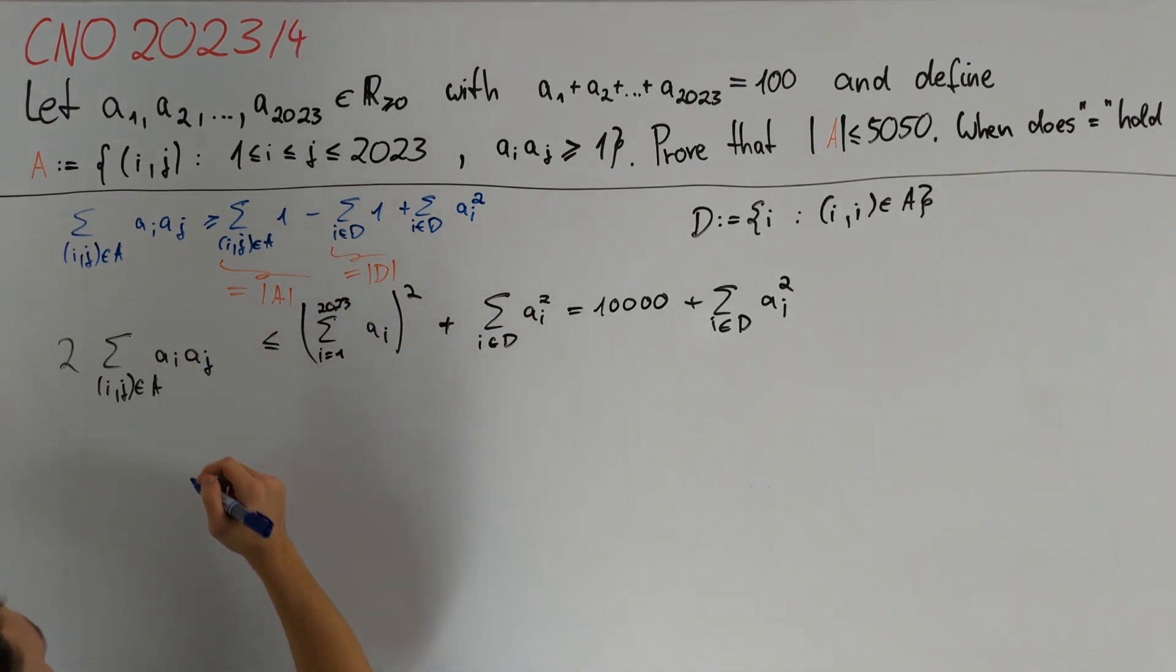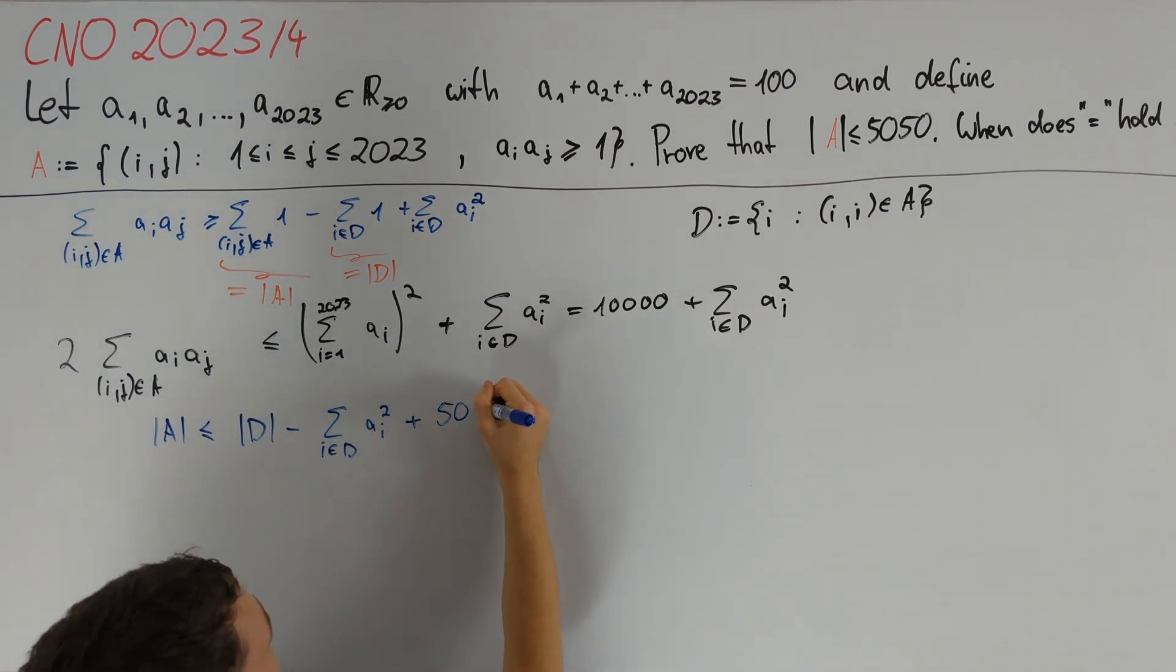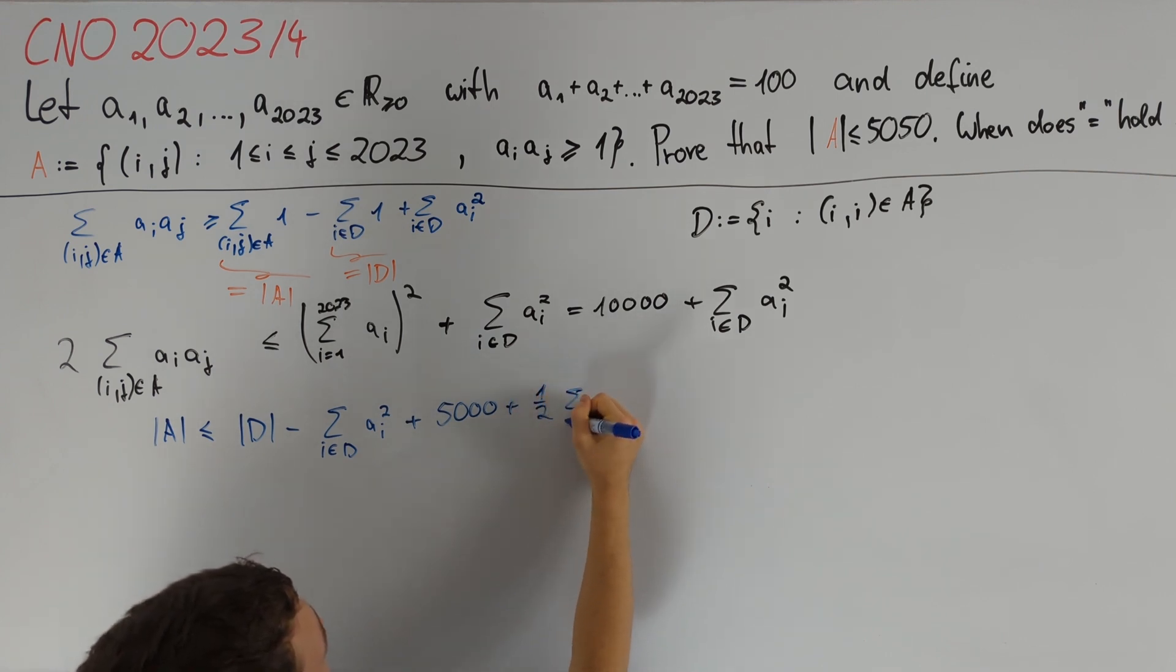Rearranging our first inequality yields that the cardinality of A is less than or equal to the cardinality of d minus sum of i in d of a_i squared plus this sum, which we now know to be less than or equal to this divided by 2. So we get 5000 plus one half sum i in d of a_i squared.